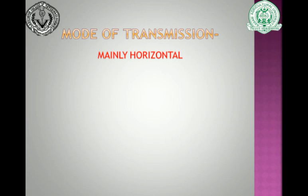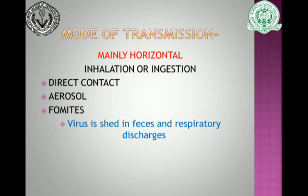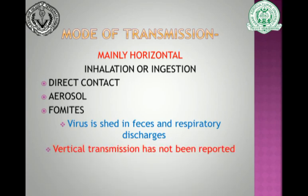The mode of transmission is mainly horizontal, transmitted by direct or indirect contact, by inhalation or ingestion, by aerosol, and through fomites. The virus is shed in feces and respiratory discharges, contaminating feed and water, which serve as sources of infection for other birds. Vertical transmission has never been reported, although surface contamination of eggs can occur, making egg surfaces a source when transported to hatcheries.